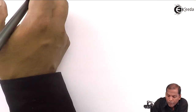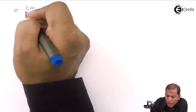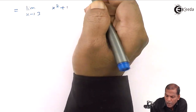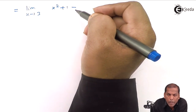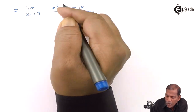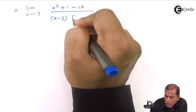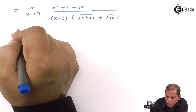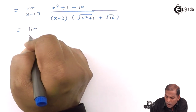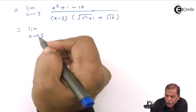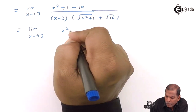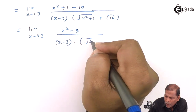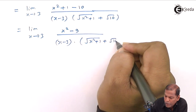The next step: limit x tends to 3. The square and root cancel, so we are left with x squared plus 1, and again the square and root cancel to give 10, upon x minus 3 into square root of x squared plus 1 plus square root of 10. So the numerator becomes x squared plus 1 minus 10, which gives x squared minus 9, upon x minus 3 into square root of x squared plus 1 plus square root of 10.